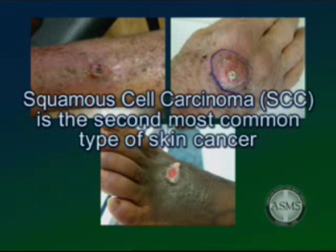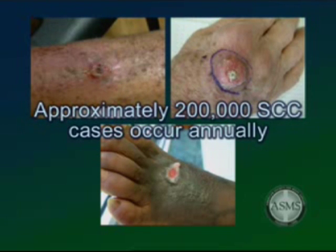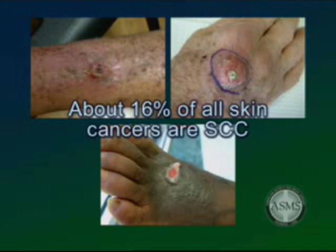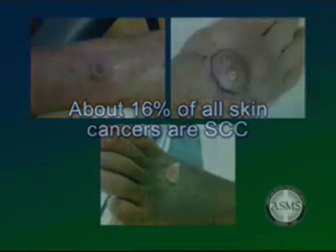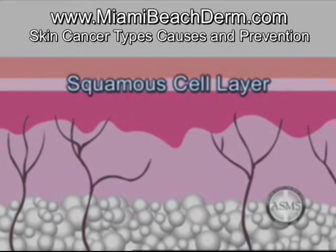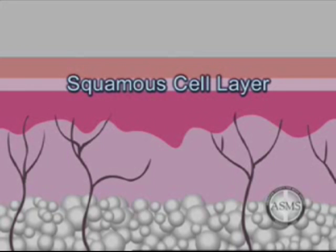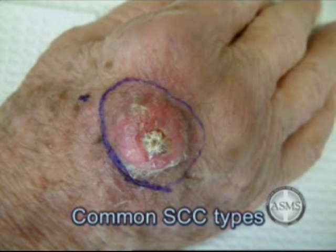Squamous cell carcinoma (SCC) is the second most common type of skin cancer in the United States, with approximately 200,000 cases occurring annually, responsible for about 16% of all skin cancer cases. This cancer develops from cells in the epidermis known as squamous cells. Squamous cell carcinomas are more dangerous than BCC because they have a greater tendency to recur after surgery and to metastasize to other organs. It often appears as a red nodule or rough scaling patch.